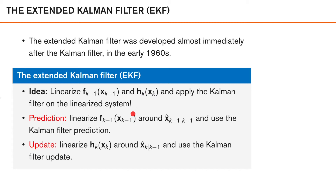In the prediction step, we linearize our nonlinear motion model around our posterior estimate from the previous time instance, and use a normal Kalman filter prediction. Why do we use the posterior mean from the previous time instance as our linearization point? Our motion model is a function of x_{k-1}, and our best guess of what x_{k-1} is when we do the prediction is our posterior mean. So naturally, we want our linearization to be as accurate as possible at or near where we think x_{k-1} actually is.